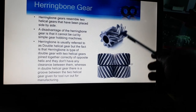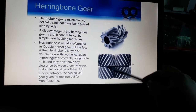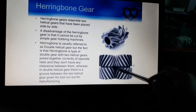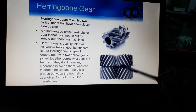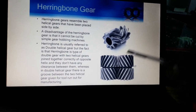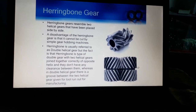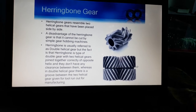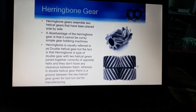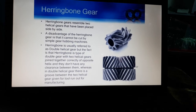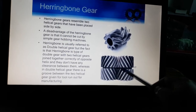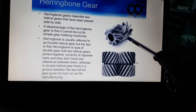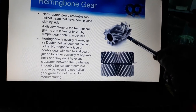The disadvantage of herringbone gear is that it cannot be cut by a simple gear hobbing machine. Herringbone is usually referred to as double helical gear, but the fact is that herringbone is a type of double helical gear. When the gap between the two helixes is zero, then the double helical gear is known as herringbone gear.